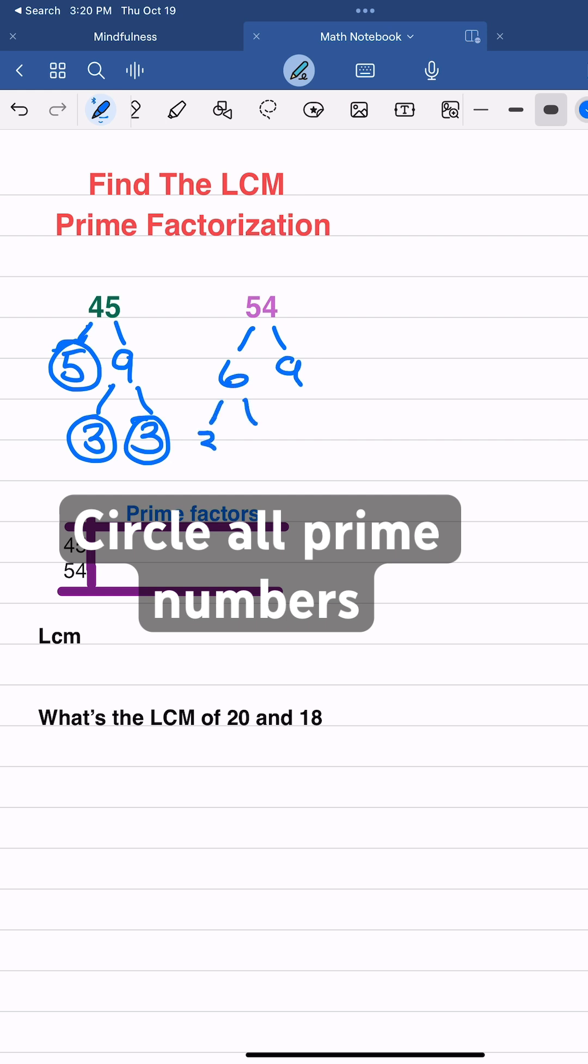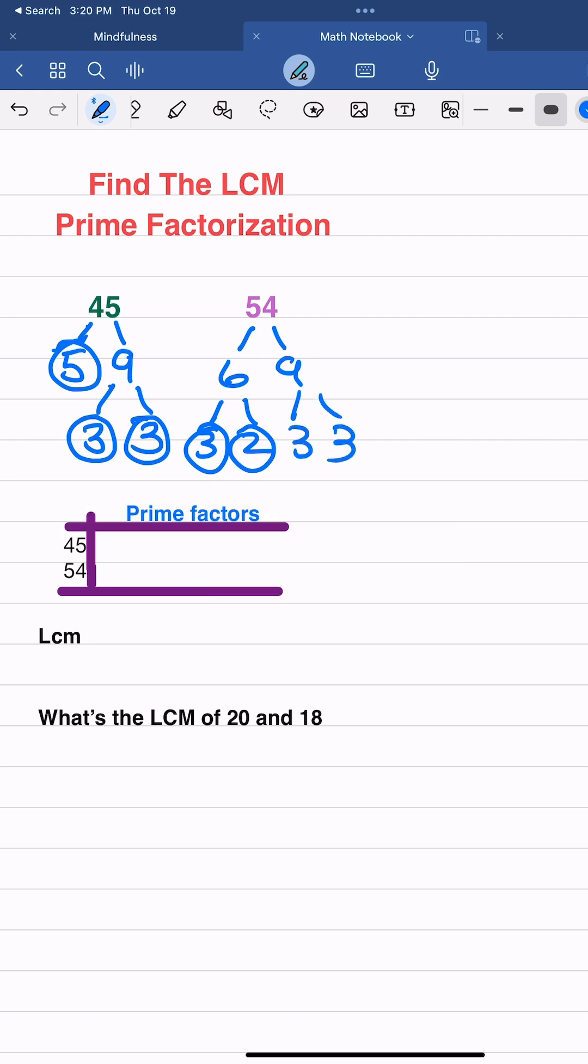For 54, 6 times 9, breaking up the 6 because it's composite into 3 and 2. Now I've got the primes. Again, circling all my primes.